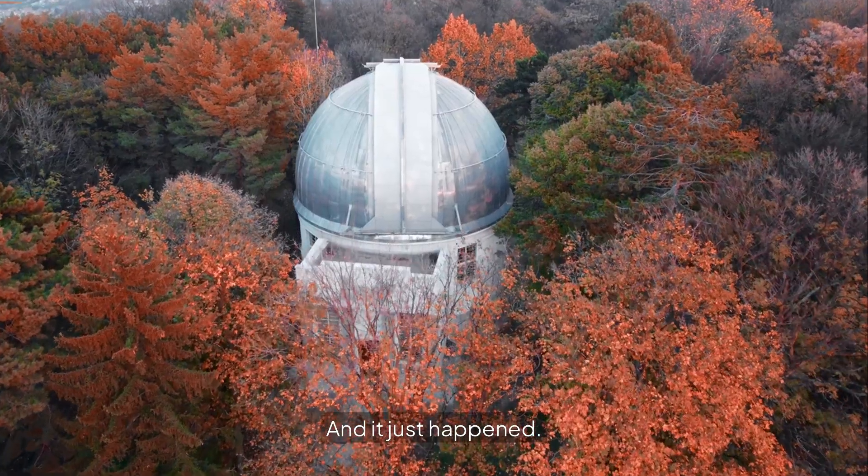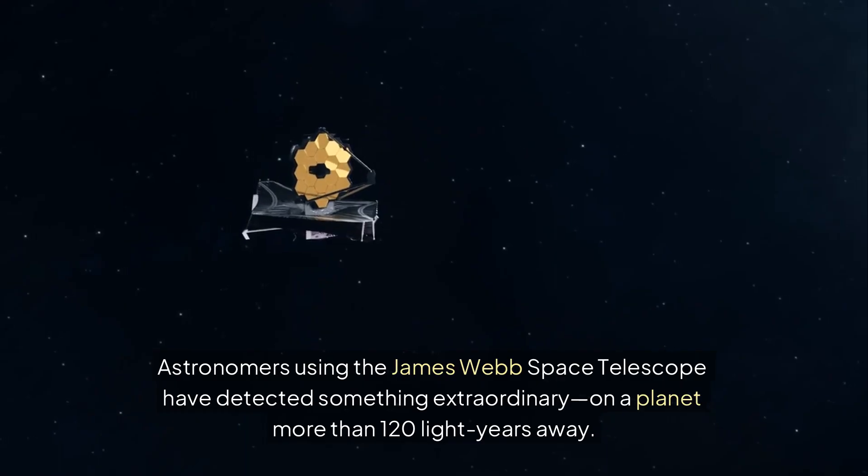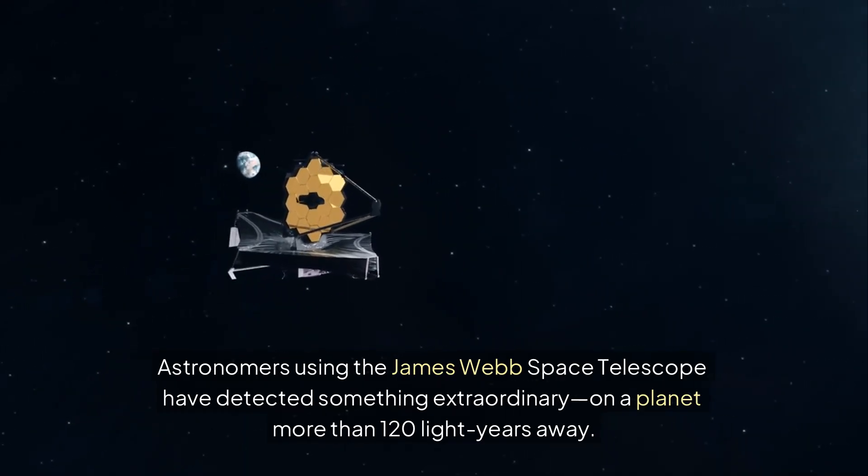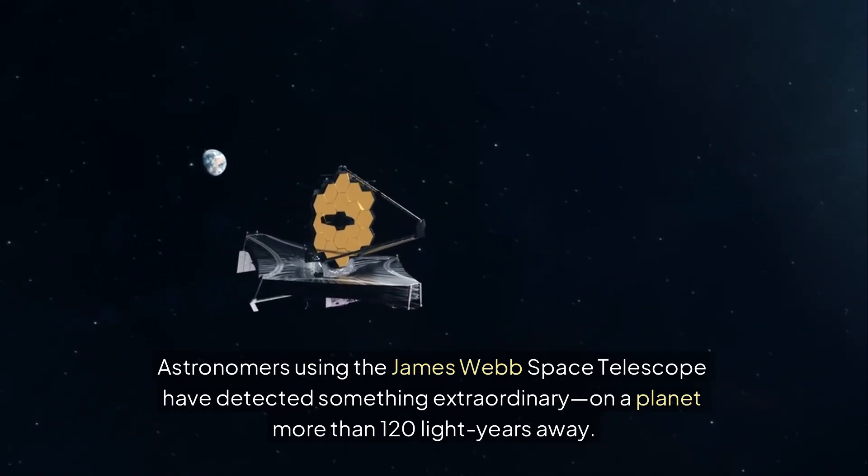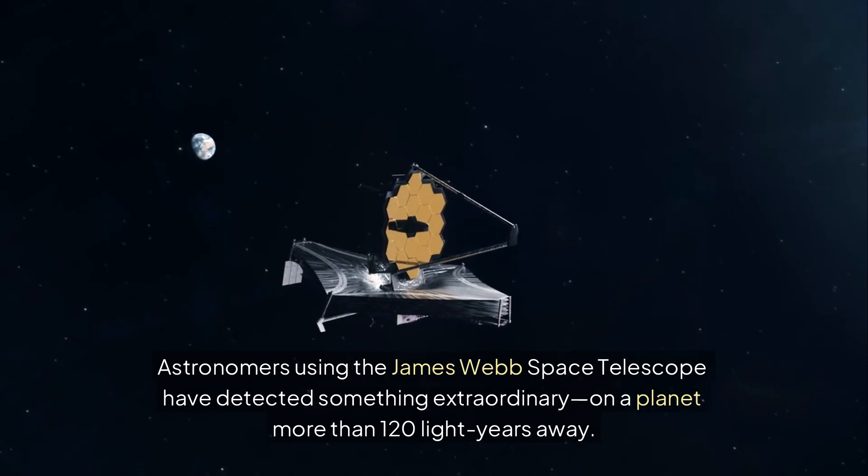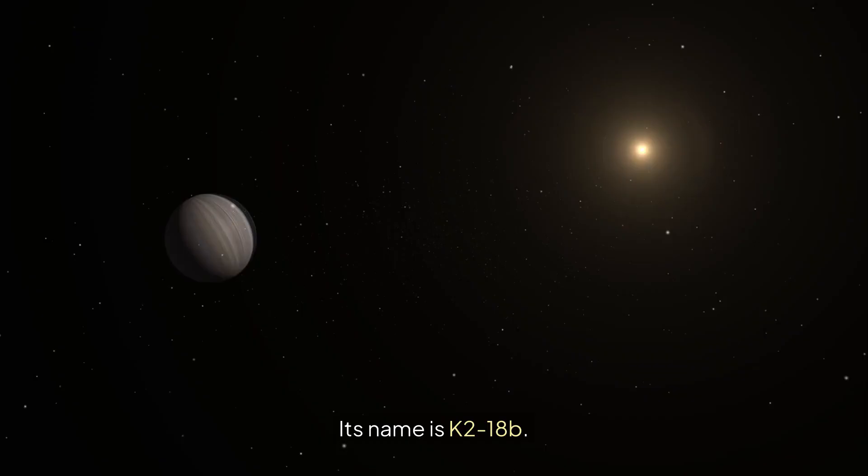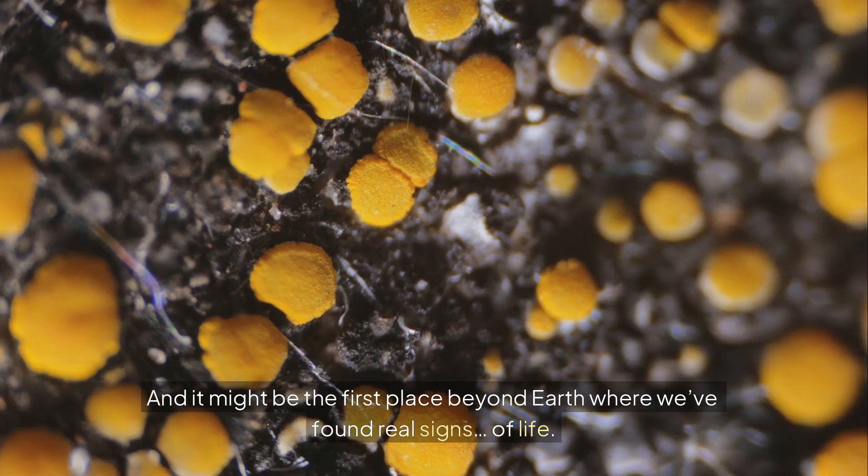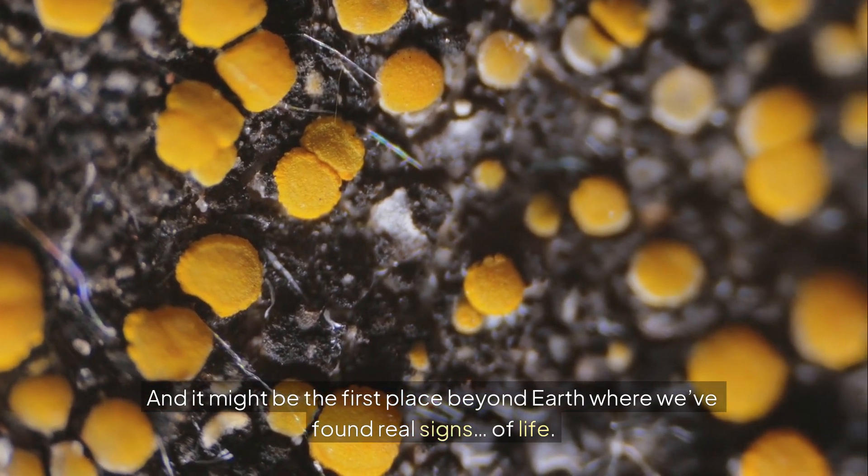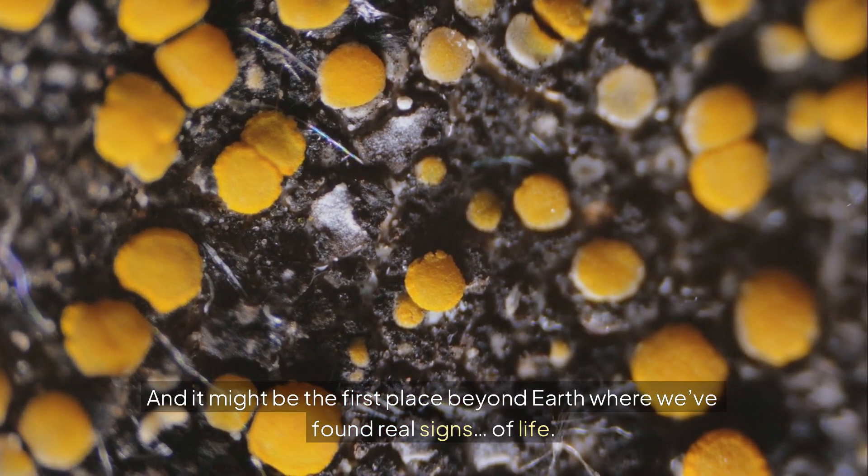This isn't science fiction. This is real, and it just happened. Astronomers using the James Webb Space Telescope have detected something extraordinary on a planet more than 120 light-years away. Its name is K-218b, and it might be the first place beyond Earth where we found real signs of life.